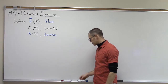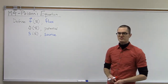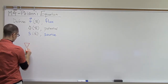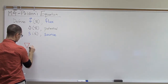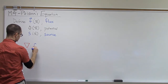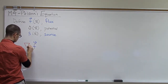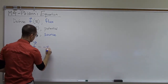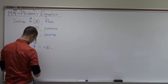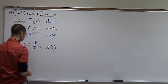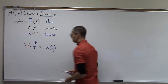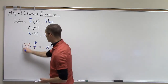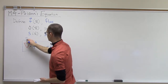We saw in our previous video on the divergence theorem what we call the mass balance equation. But in general, we can write a balance equation for a flux variable. We can say that the divergence of the flux is equal to the negative of the source term, and that's a function of x. This is a differential form of the equation for balance.